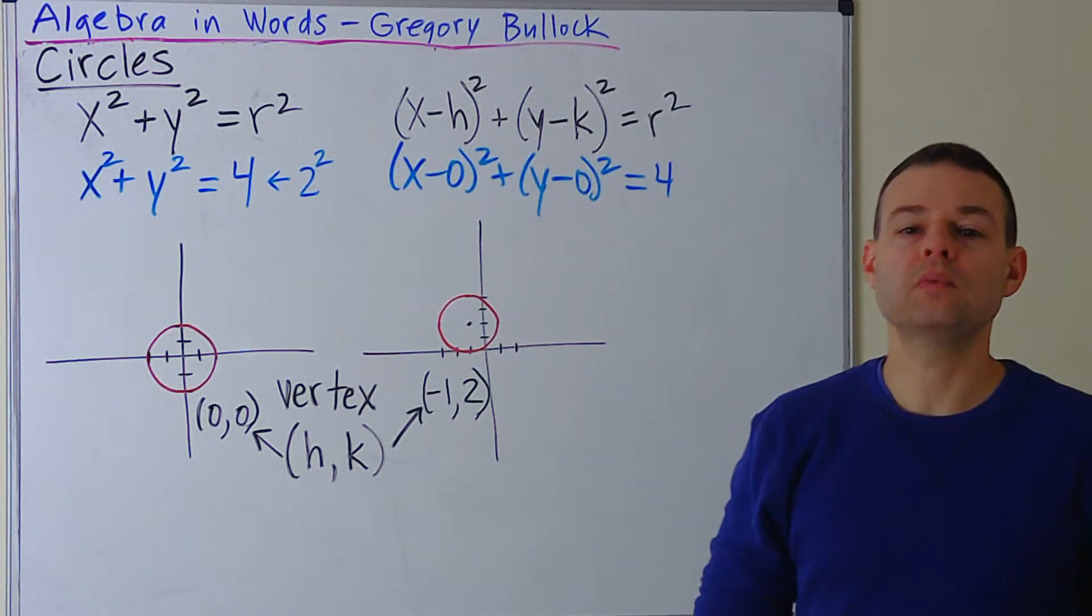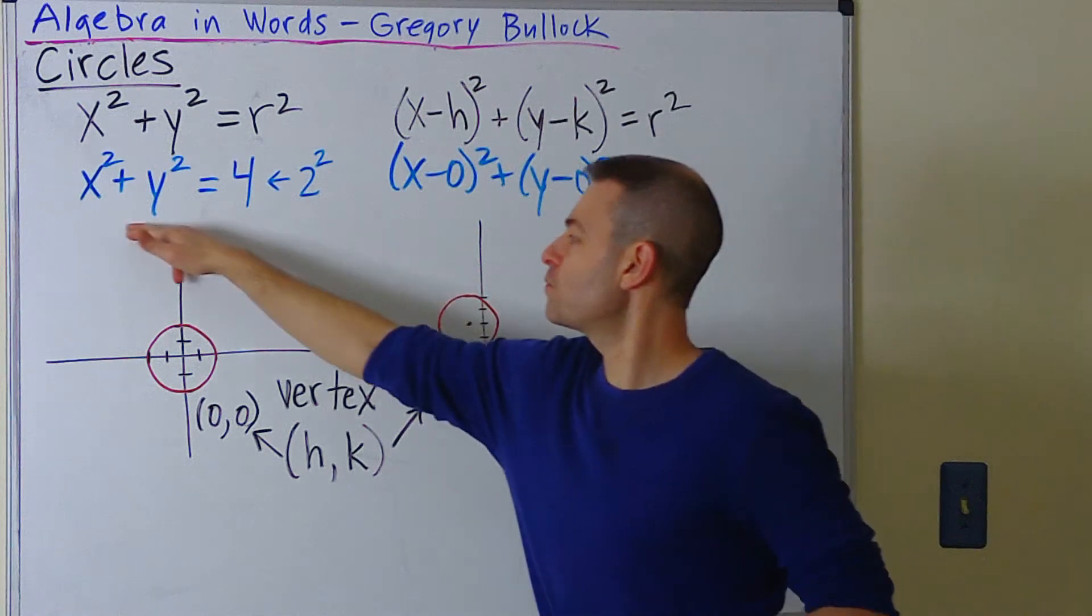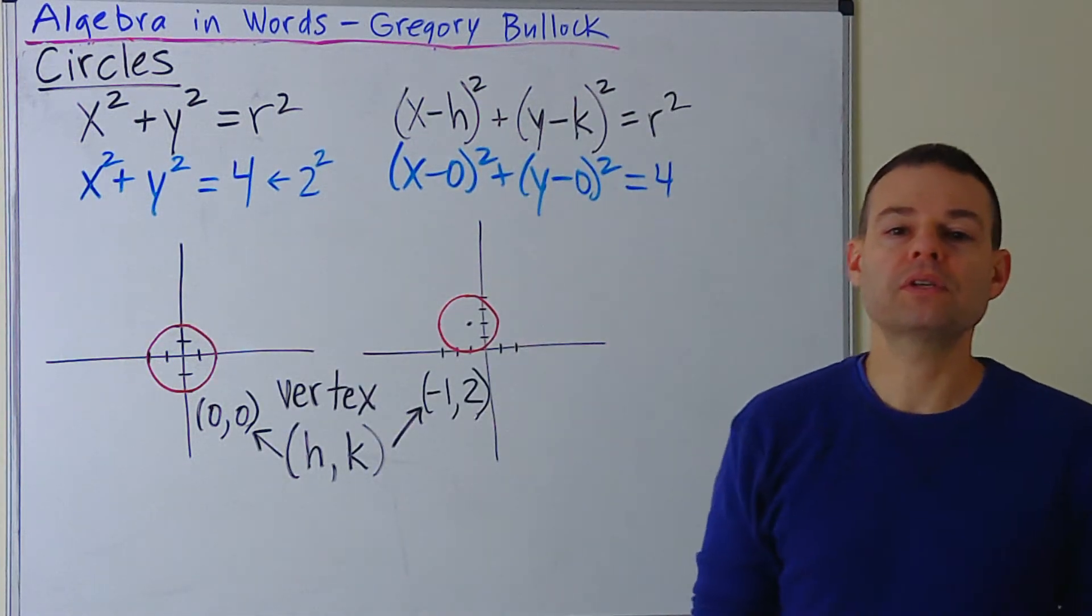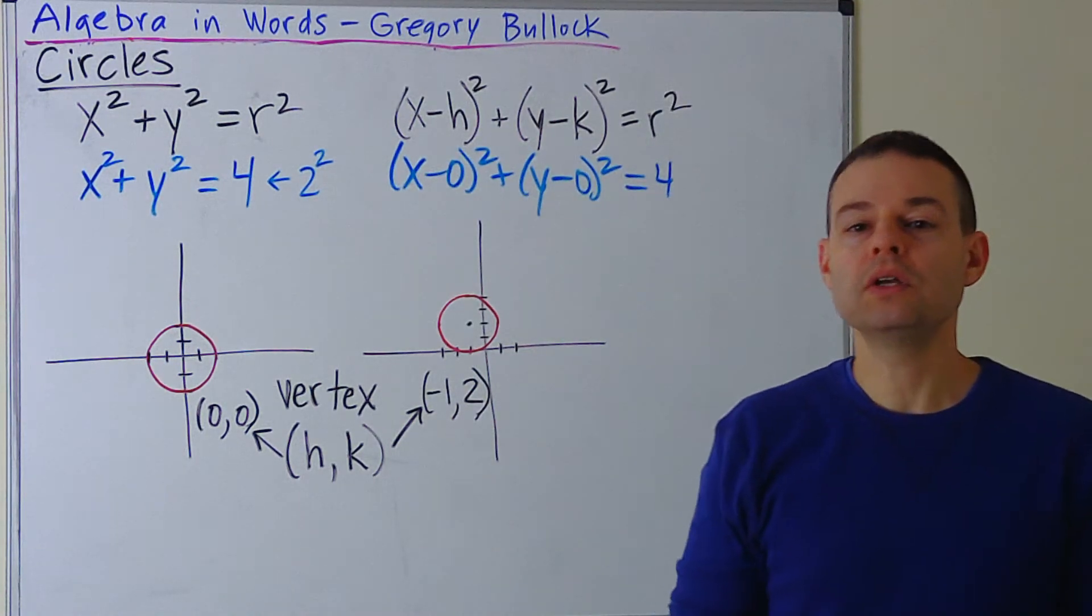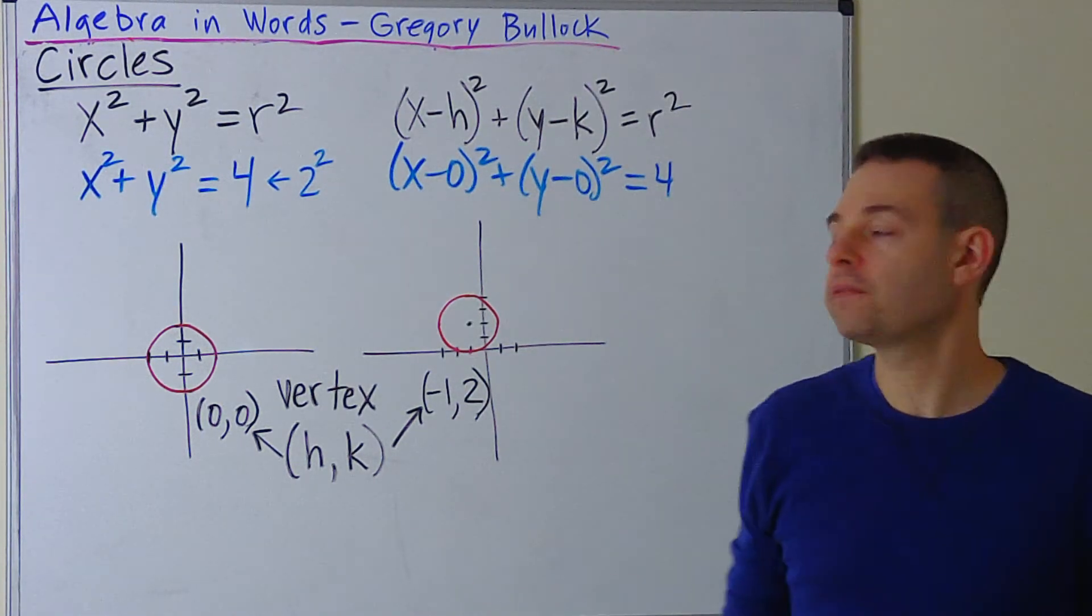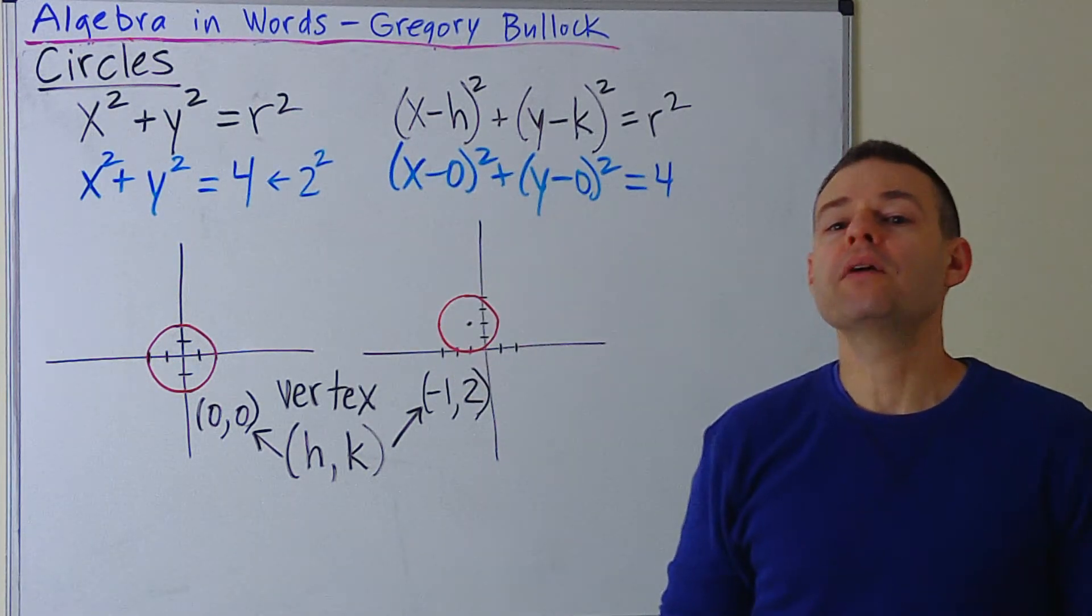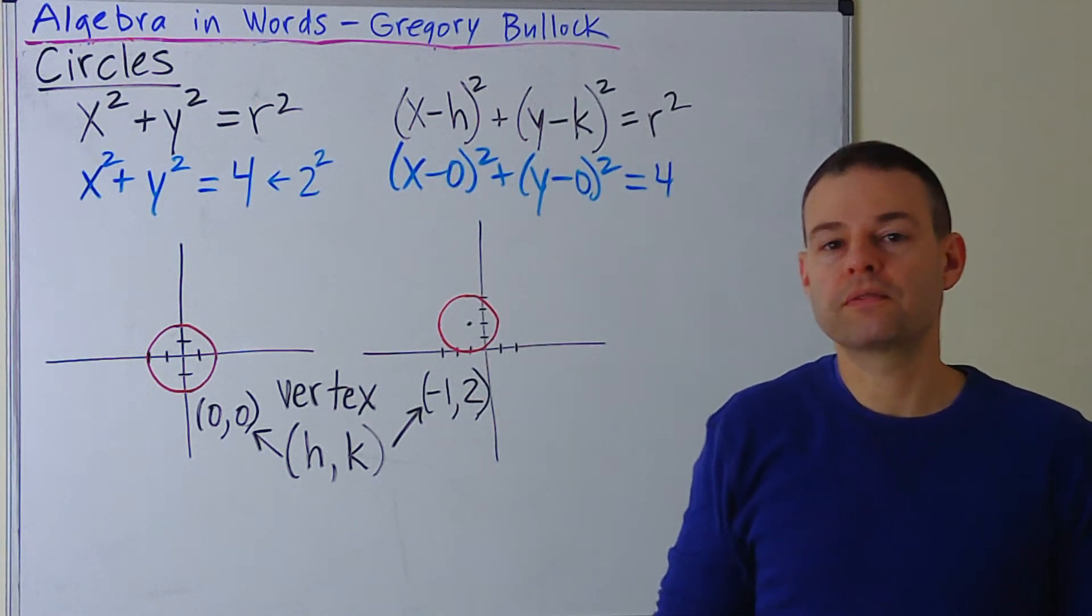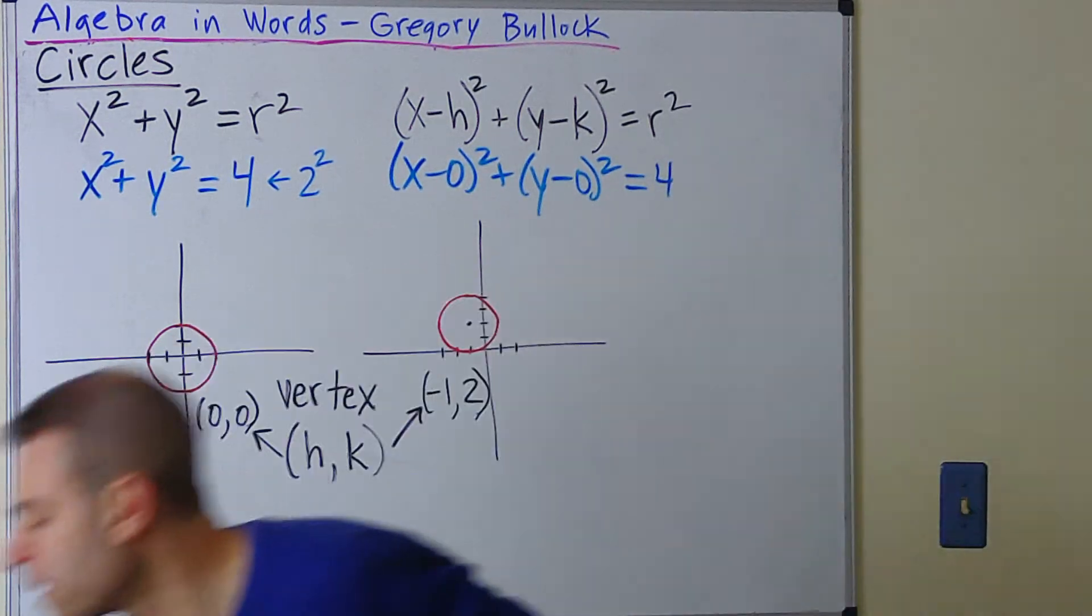Okay, so now what I would like you to do is to see how this form relates to this form. And what I want you to see is that since this is minus 0 and this is minus 0, you can basically chop that off and just get x² and y². However, what if there is a shift from the origin?